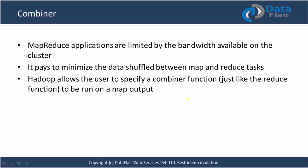Combiner - a little important topic. Guys, we are aware that MapReduce applications are limited by bandwidth available on the cluster, because there is movement of data from mapper node to reducer node. If we are having a 1 gbps network and the data volume is in the range of petabytes or thousands of petabytes, you can understand how long it will take to move petabytes of data over a 1 gig network.